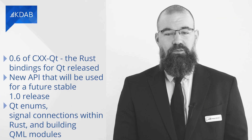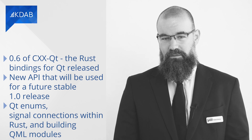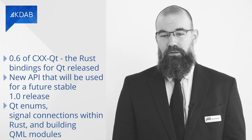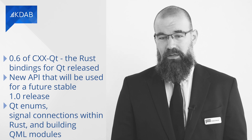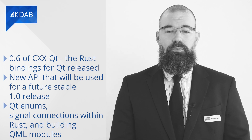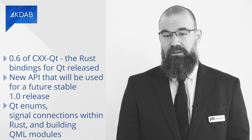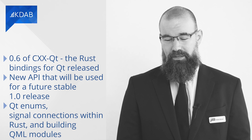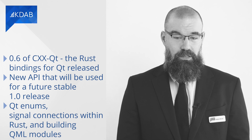Version 0.6 of CXX-Qt, the Rust bindings for Qt, has been released. This version brings a new API that will be used for a future stable 1.0 release. Additionally, support for Qt enums, signal connections within Rust, and building QML modules has been added. Read more in the release blog linked below. Feel free to try out the API to help find any missing gaps before the stable 1.0 release.